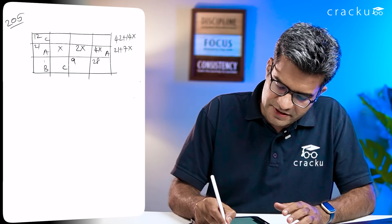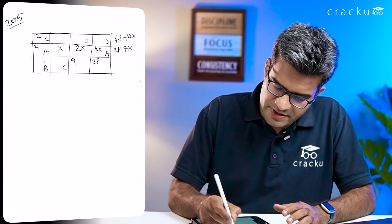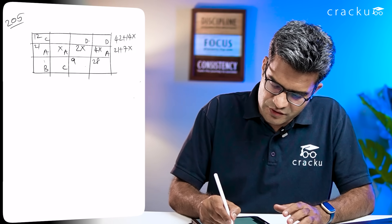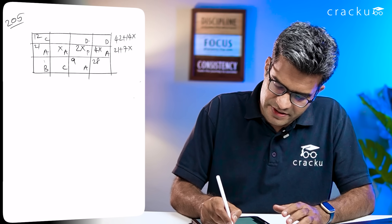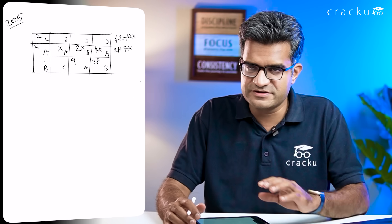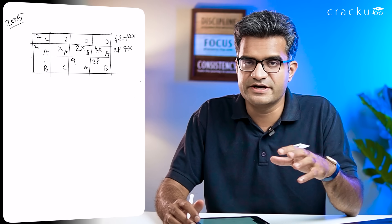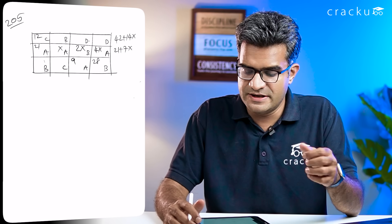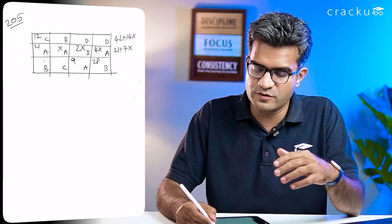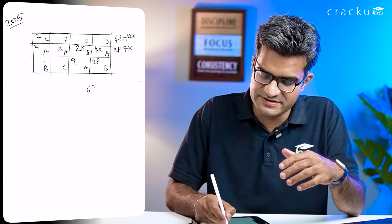I was also able to figure out which daughter each of the 12 plots belonged to based on the clues. I could determine that certain plots go to D, some to A, and some to B. Based on this, the sum of the first two rows combined is (42 + 14x) + (21 + 7x), which equals 63 plus 21x.